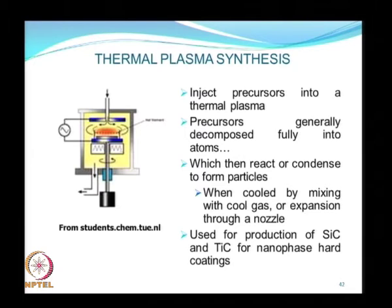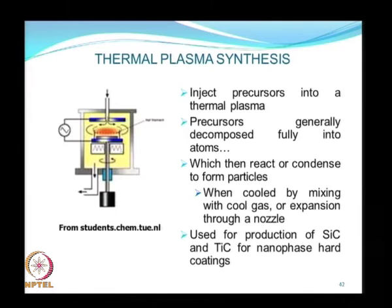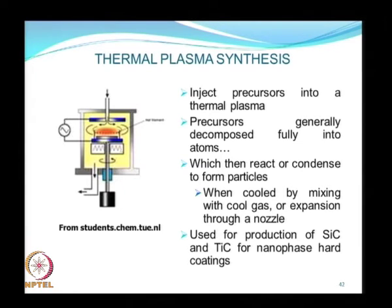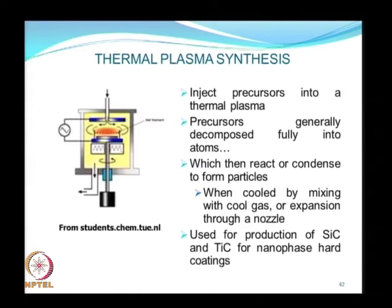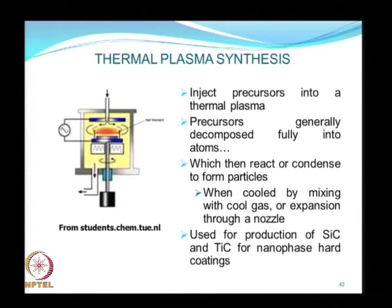Thermal plasma synthesis requires that you take vapor precursors and introduce them into a thermal plasma. The plasma supplies additional energy to break down the precursors completely into atoms. Precursors may be in the form of high molecular weight molecules which, using plasma irradiation, can be broken down into constituent atoms that react or condense to form particles. Cooling is accomplished by mixing with a cool gas or expanding vapors through a nozzle. This method is widely used for production of silicon carbide and titanium carbide for nano-phase hot coatings.